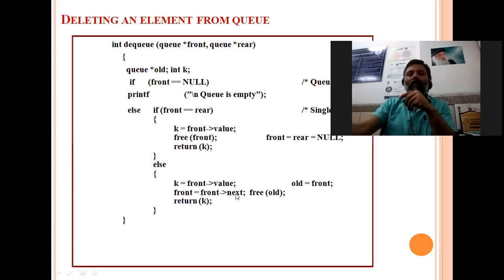Now front will point to the next one. This previous front that we have stored in old, we will deallocate by calling the function free old. This memory will be deallocated and key is returned here.